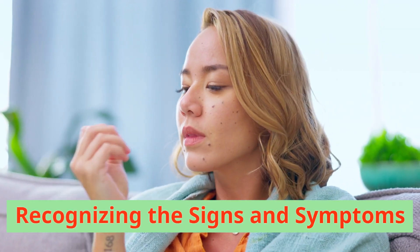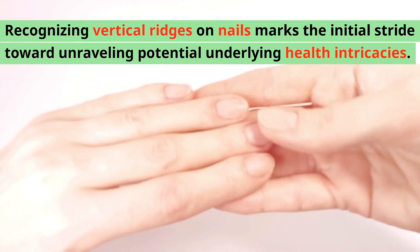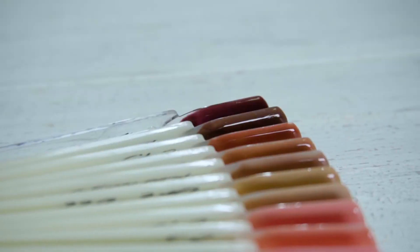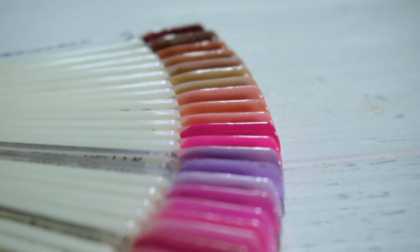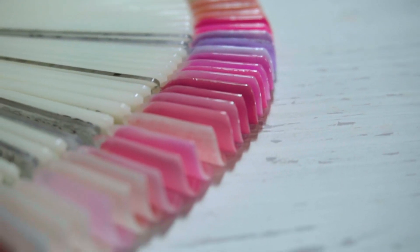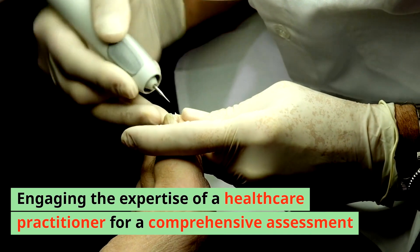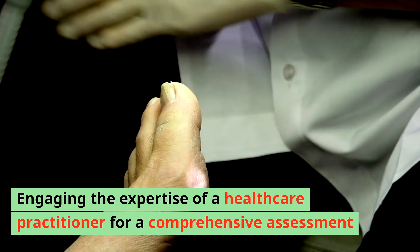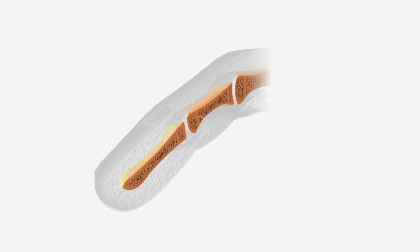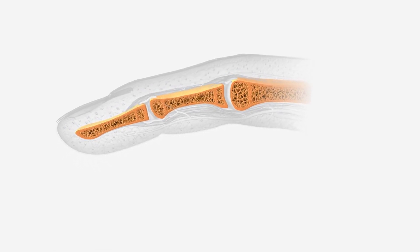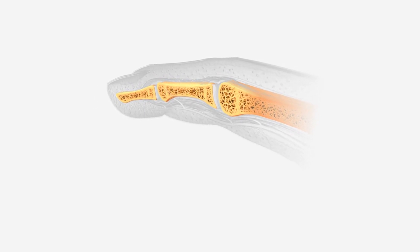Recognizing the signs and symptoms: Recognizing vertical ridges on nails marks the initial stride toward unraveling potential underlying health intricacies. Although superficial ridges may seem inconsequential, deeper furrows, alterations in nail hue, or concurrent symptoms demand meticulous scrutiny. Engaging the expertise of a healthcare practitioner becomes paramount. Each vertical line serves as a subtle signal, hinting at the inner workings of the body's intricate machinery. As guardians of our well-being, our nails offer invaluable insights.